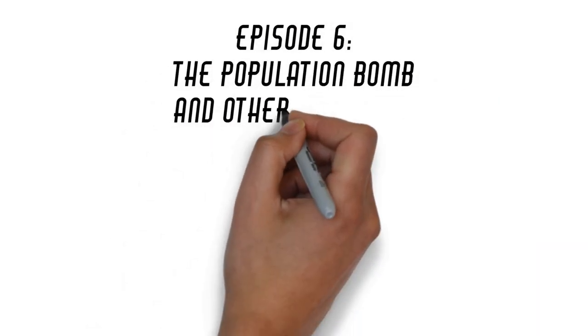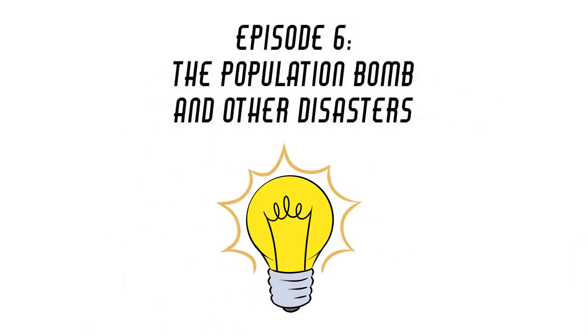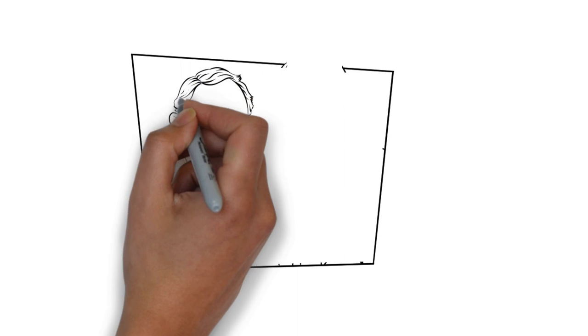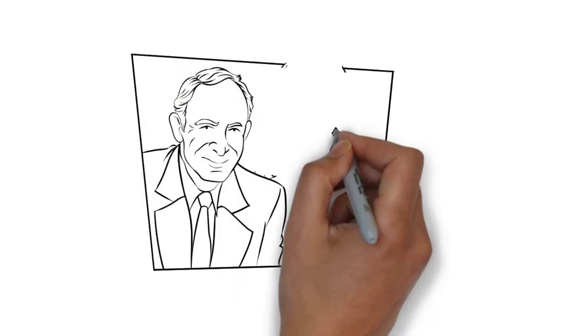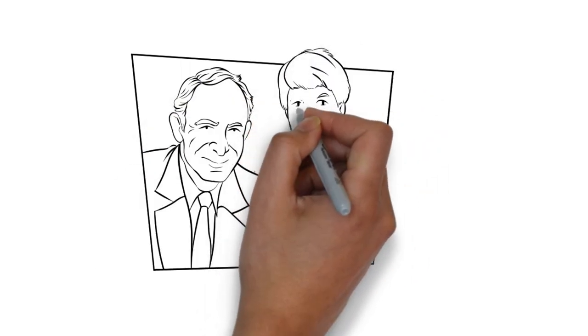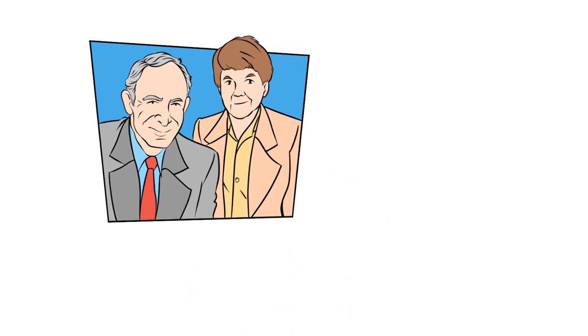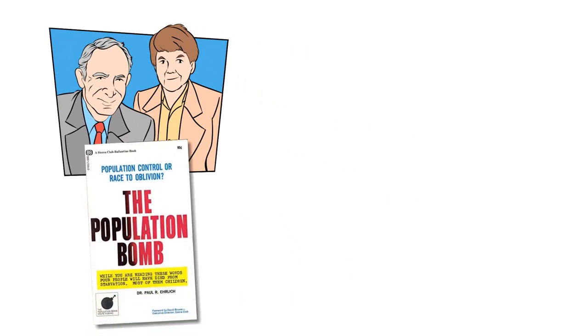Episode 6, The Population Bomb and Other Disasters. In 1968, two Stanford professors, Paul and Anne Ehrlich, wrote a book at the suggestion of the executive director of the Sierra Club, a prominent environmentalist organization, titled The Population Bomb.